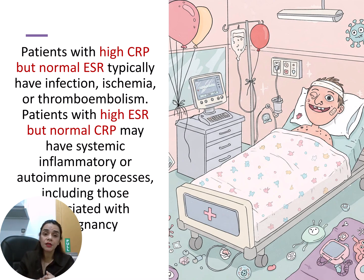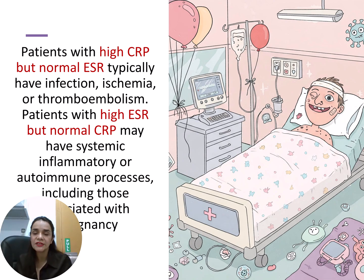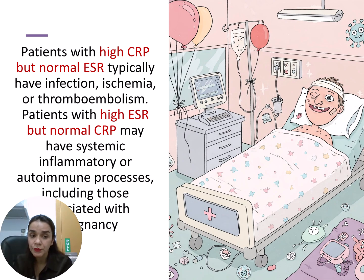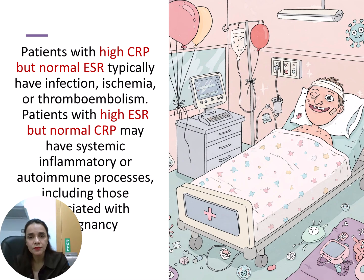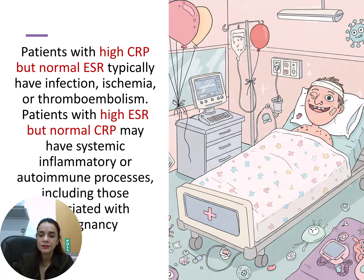The other situation is high ESR with normal CRP. These patients may have systemic inflammation, an autoimmune process, or any long-lasting condition. They can also be associated with malignancies. In some malignancies, we have high ESR and normal CRP.